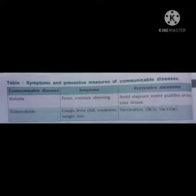The first disease is malaria. Symptoms of malaria are fever and constant shivering. The preventive measure is to avoid stagnant water puddles around your house. The second disease is tuberculosis. Symptoms of tuberculosis are cough, fever, weakness, and weight loss. The preventive measure is vaccination — the BCG vaccine.